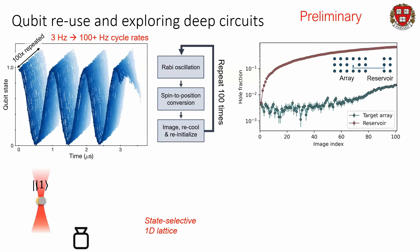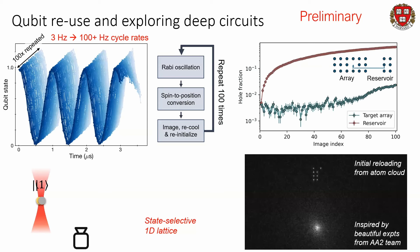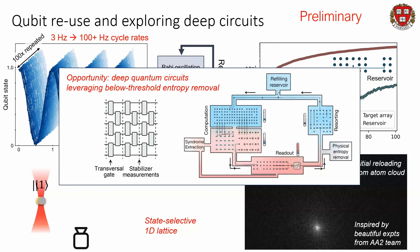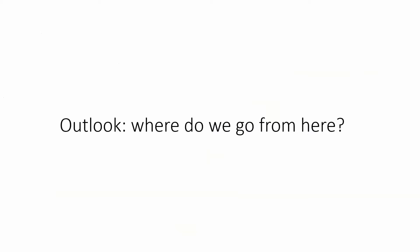That's one important aspect of doing deep computation. Another important aspect is keeping the array filled. Holes get introduced into the array, but we just re-plug them using a reservoir in the system, keeping our target array at high filling fraction. Eventually our reservoir starts to get empty, so we're also exploring initial experiments where we're reloading from an atomic cloud and trying to get atoms from a magneto-optical trap to continuously replenish our atoms for even longer. What we're excited about is exploring deep quantum circuits leveraging below-threshold entropy removal — really like a big thermodynamic cycle where computation creates entropy, stabilizer measurements remove it, but then the ancillas need to be measured and reinitialized.